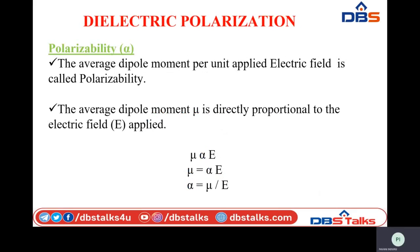Polarizability (α) is defined as the amount of dipole moment induced per unit applied electric field: α = μ/E. The dipole moment created in a dielectric is always proportional to the applied electric field — if the electric field is stronger, the dipole moment will be larger. So μ is directly proportional to E, giving μ = α × E, where α is the polarizability, that is, the ratio of net dipole moment to the applied electric field.